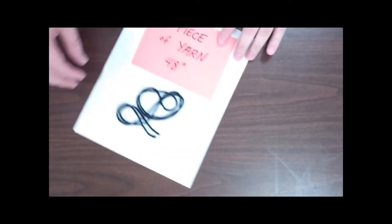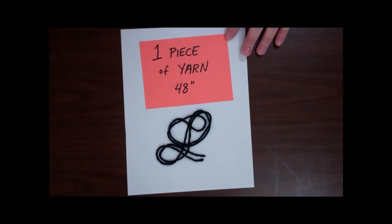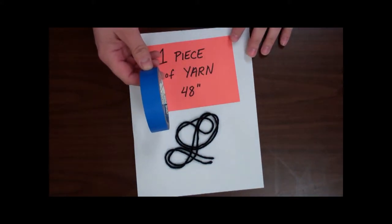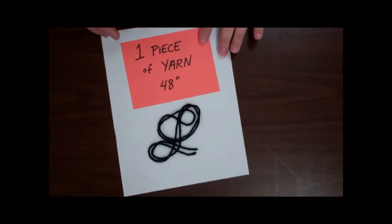Lastly, you're going to need one piece of yarn cut roughly to forty-eight inches. Normally, I take a piece of blue painter's tape and lay it out on a table already pre-cut to size, making it easier and quicker for students to cut.